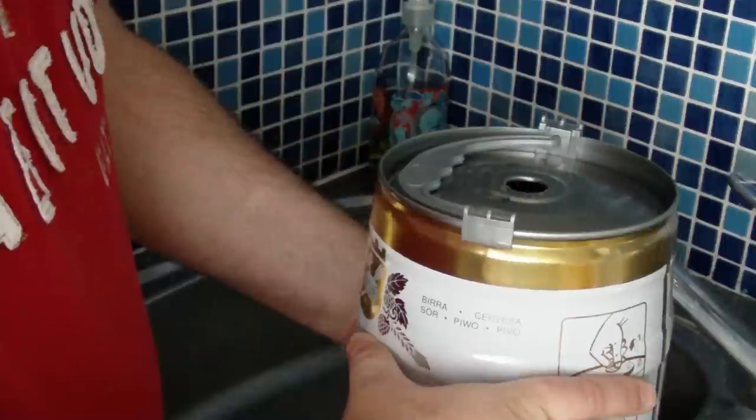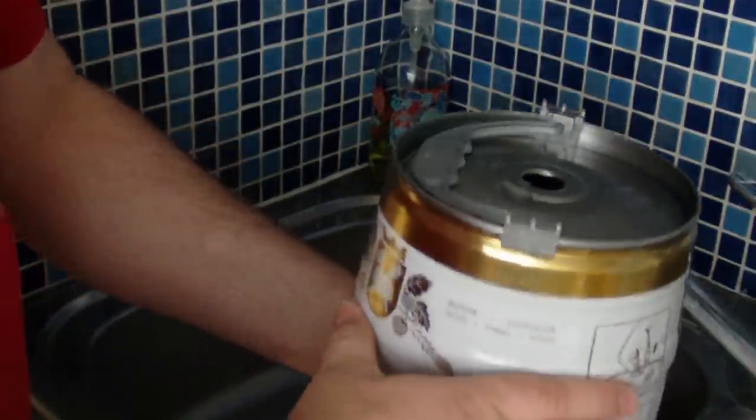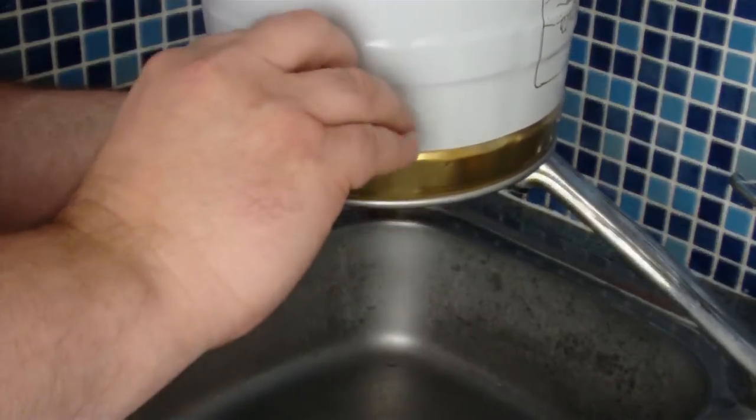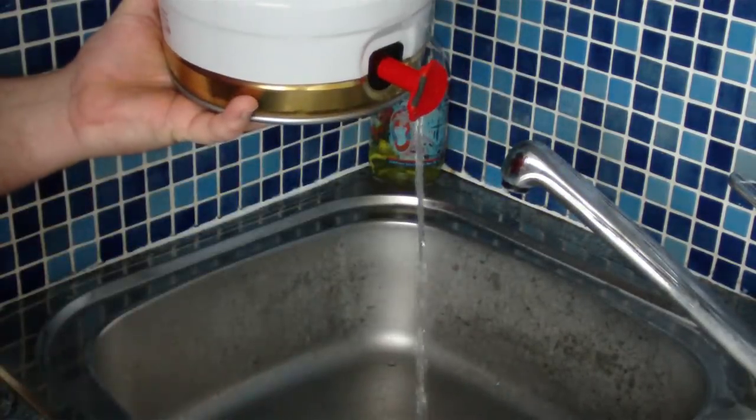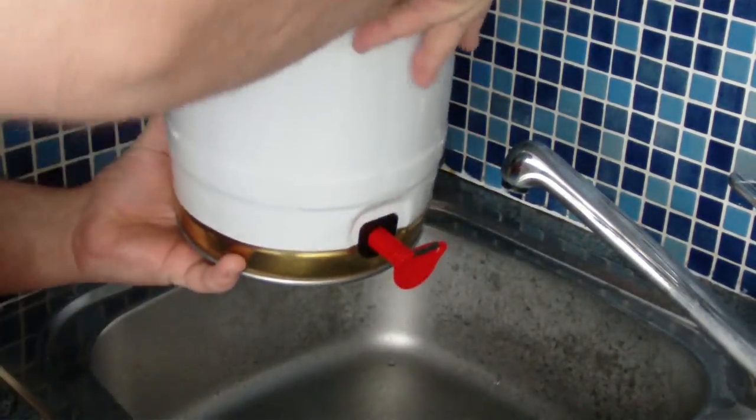Now if we turn this upside down the water is going to glug slowly because it's not fully open. So if I open this tap now obviously the water's going to come out. Let's have a look. You see that should be beer really but it's water. If I do that when it's upside down it really shoots out through the hole. So we'll see if this works.